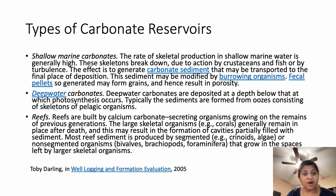Deep water carbonates are deposited at depth below that which photosynthesis occurs. Typically, the sediments are formed from oozes consisting of skeletons of pelagic organisms. Reefs are built by calcium carbonate-secreting organisms growing on the remains of previous generations. The large skeletal organisms generally remain in place after death, and this may result in the formation of cavities partially filled with sediment. Most reef sediment is produced by segmented or non-segmented organisms, such as bivalves, brachiopods, and foraminifera, that grow in spaces left by larger skeletal organisms.